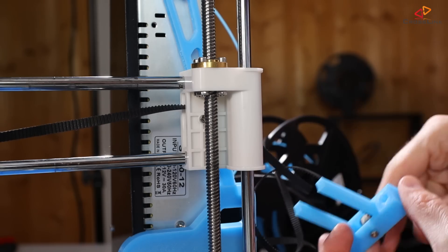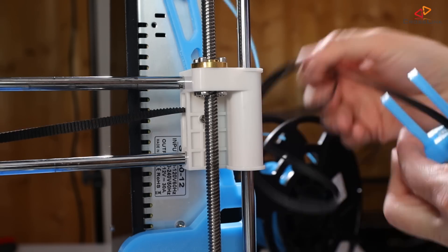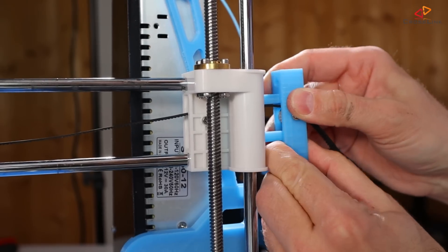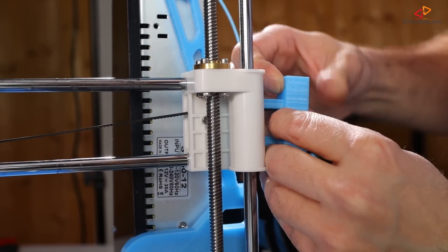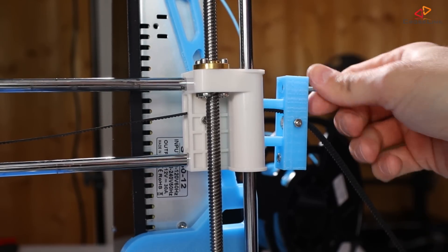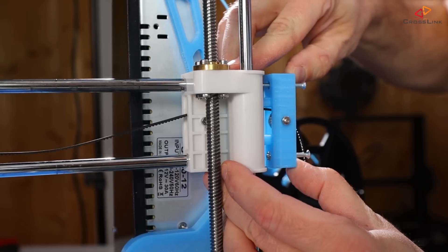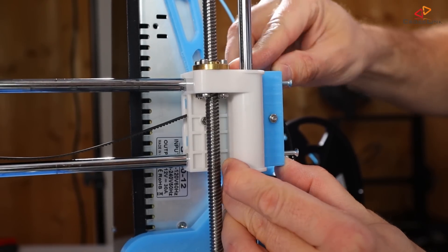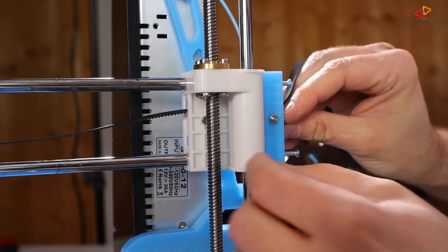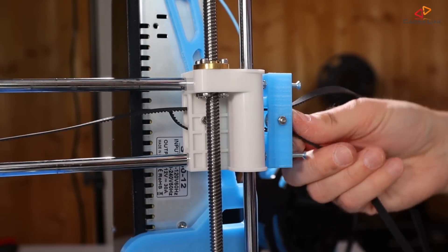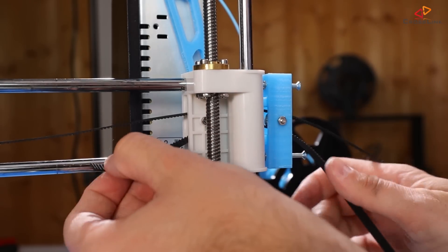Now take the belt tensioner and feed the other end of the belt through it at the upper side. Insert the two M3 nuts into the openings that face to the printer and screw in the long M3 screws. Then push the belt tensioner into the right X-carriage mount's opening. Wrap the belt around the tensioning pulley and feed it through the tensioner and the X-carriage mount at the lower side until it comes out to the left.